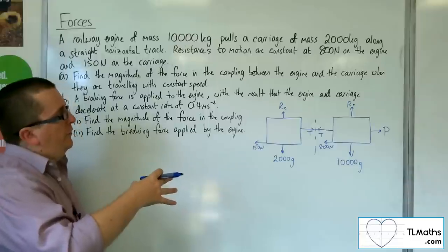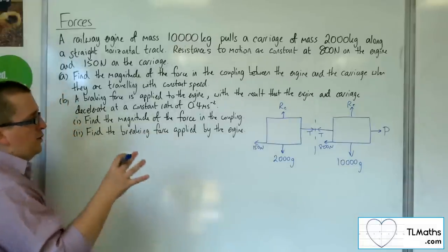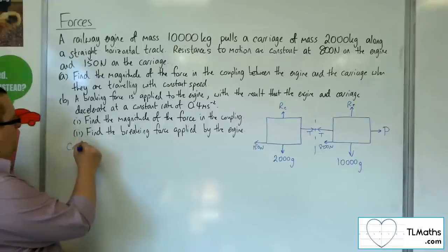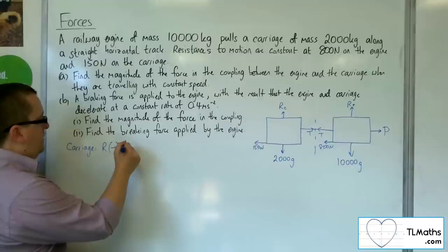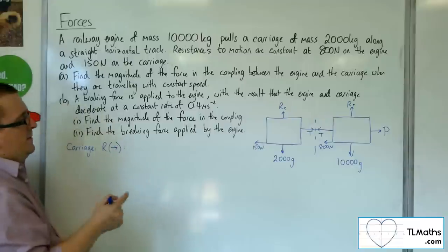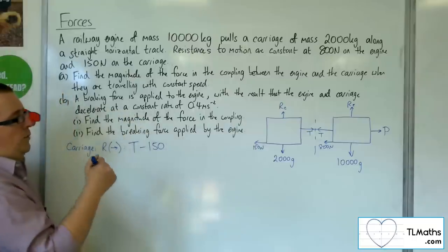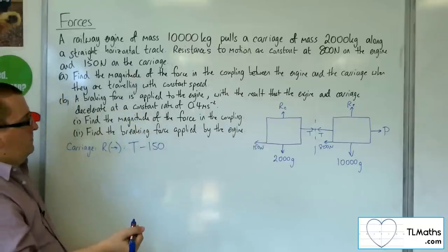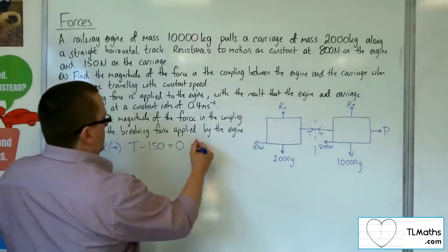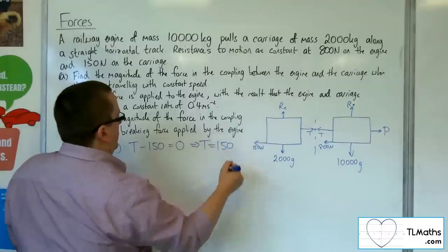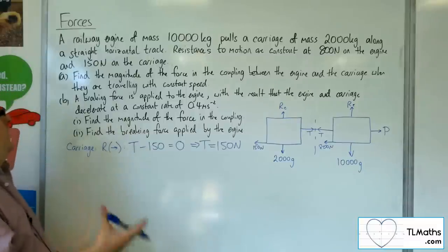Because we know it's constant speed, the acceleration is 0. Looking just at the carriage and resolving horizontally, taking right as positive, I have tension T minus 150 equals mass times acceleration, which is 0. So the tension T is 150 newtons. That's the answer to Part A.